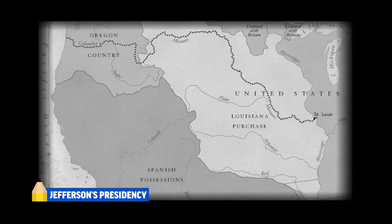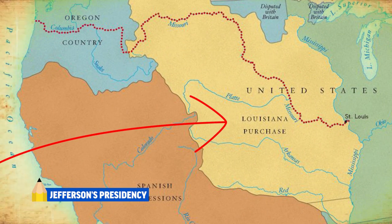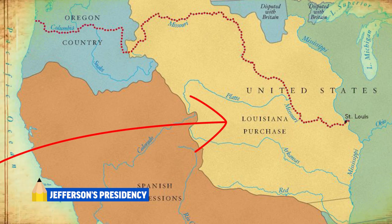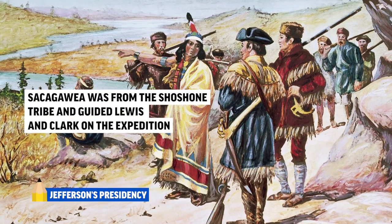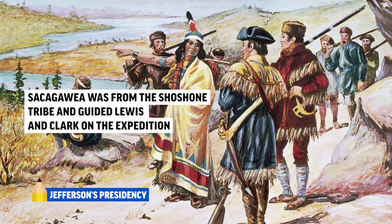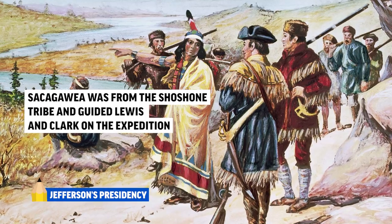Ultimately, Jefferson agreed to the Louisiana Purchase because it would further his ideals of an agrarian nation and it doubled the size of the United States. Lewis and Clark, with the help of Sacagawea, explored the territory.